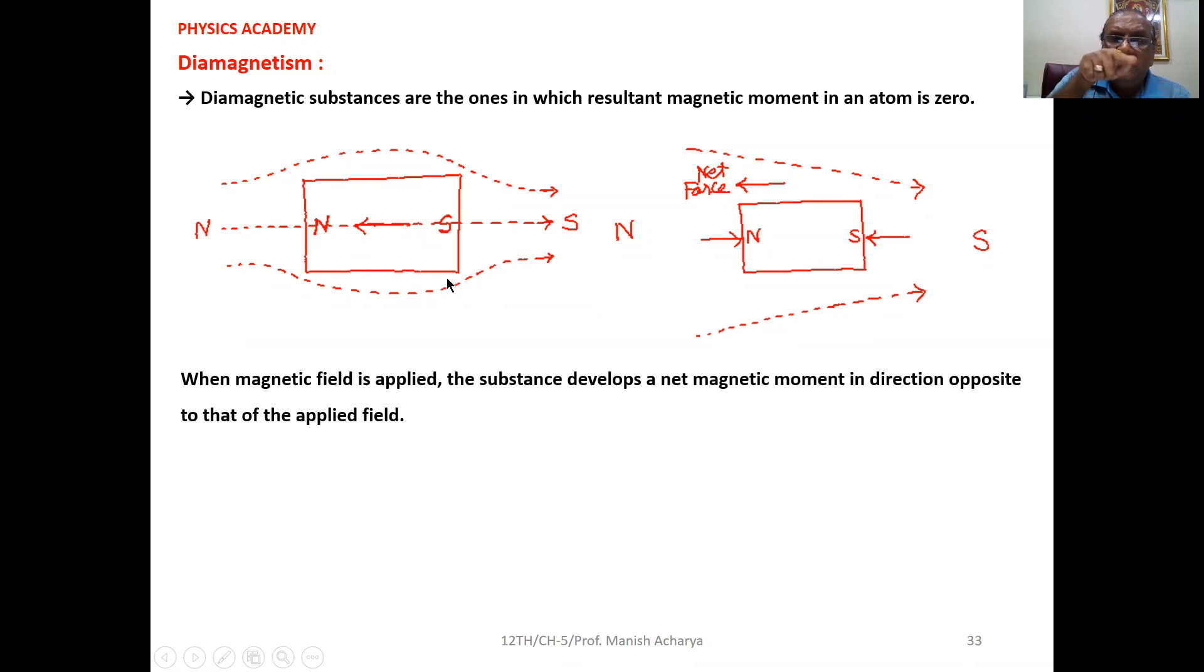If this diamagnetic substance is placed in the non-uniform magnetic field, then also the magnetic moment will be induced. The magnetic moment will be developed inside the sample. But now, see here, this South-South and this North-North will repel each other.